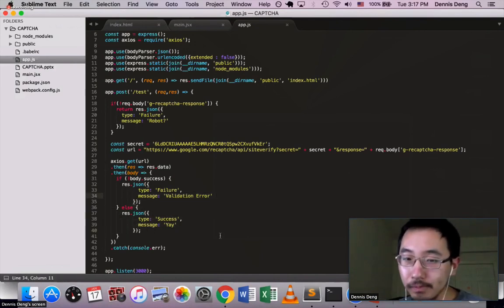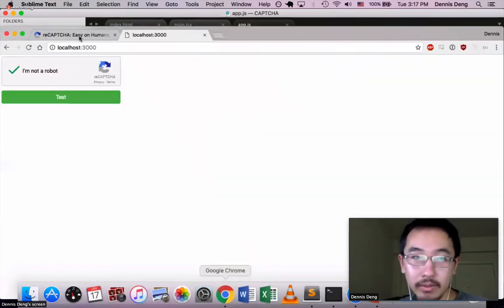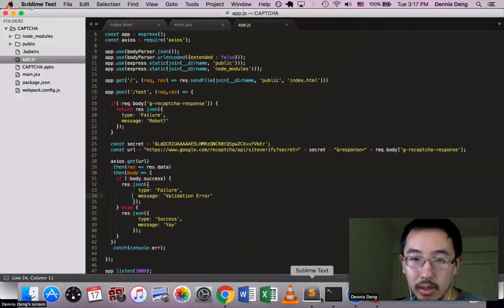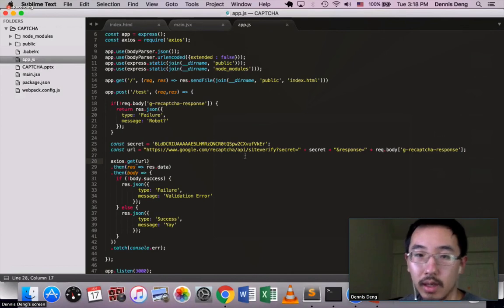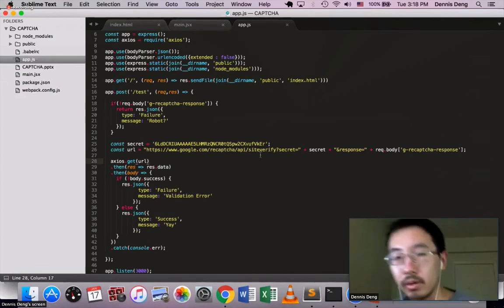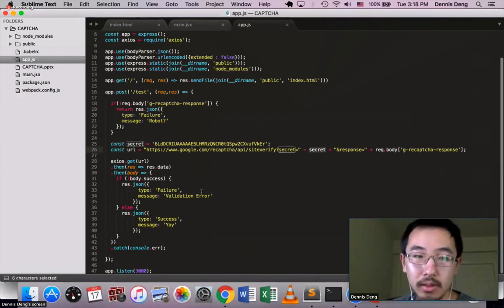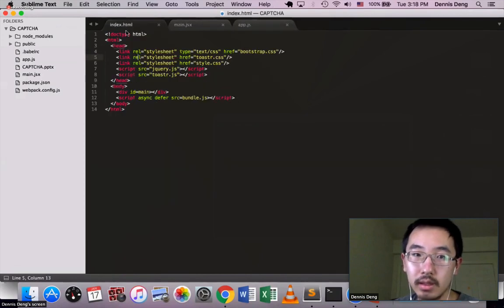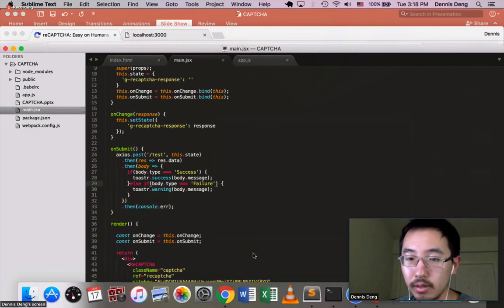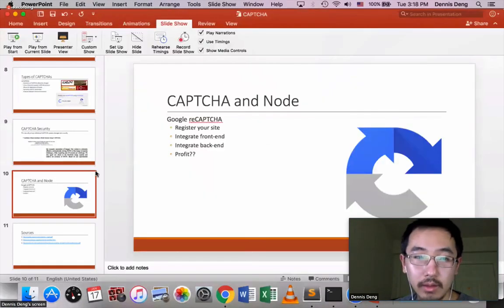One thing to note that Google doesn't explain in their documentation is that on the server side, they actually say you can send a post request. But in this case, I found that you can only send a get request since the post request doesn't actually work in this case. So if you want to do it, you have to form the URL using the parameters. But in this case, it sends back on success a success key and then a message. And basically, back on the front end, it handles that little toast.